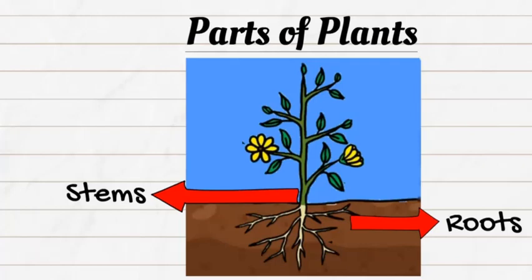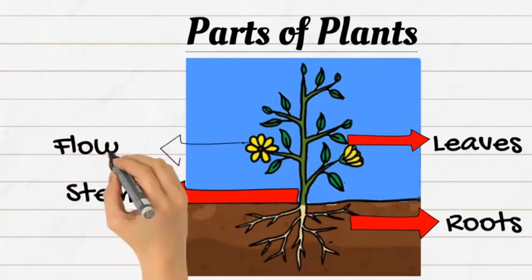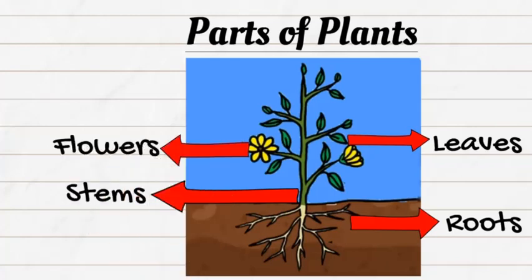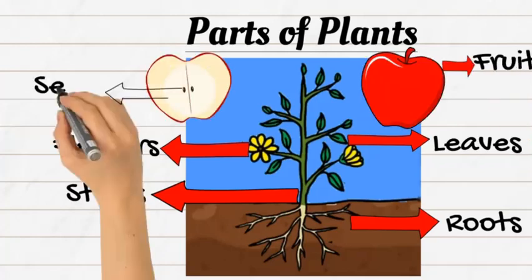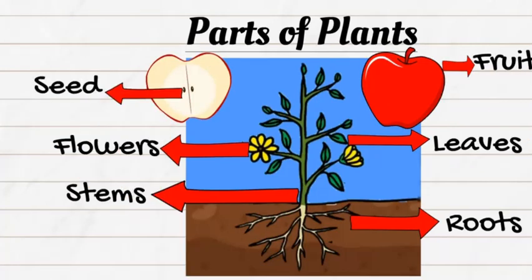The leaf is responsible for making the food of the plant. Flowers are the most attractive parts of the plant. The fruit contains seeds, which are the hard parts inside the fruit, and plants grow from their seeds.